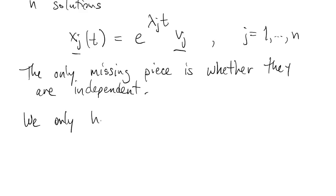Again, from the theory, we know that we only have to check the independence of the solutions at one time. If they're independent at one time, then they'll be independent at all times. So we'll pick t equals zero. But when t is equal to zero, xj just equals vj.